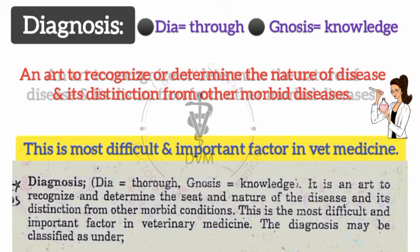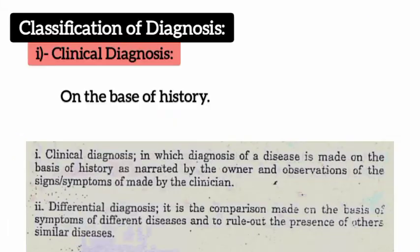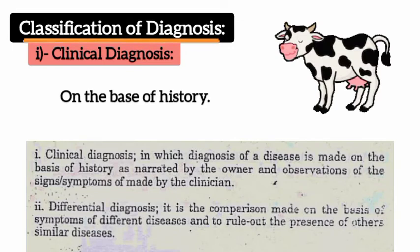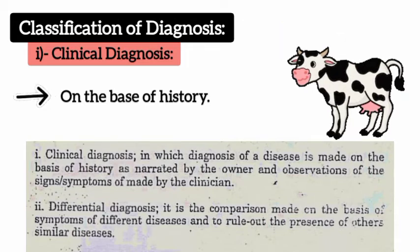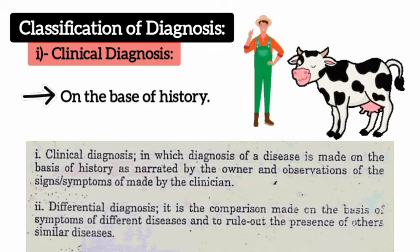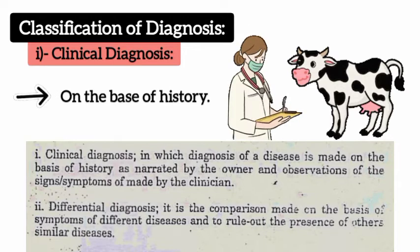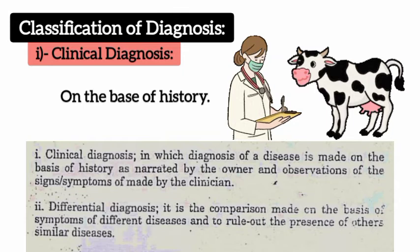Classification of diagnosis: The first class is clinical diagnosis, which includes diagnosis of any disease on the basis of history as provided by the owner of the animal, and observation of signs and symptoms by the veterinarian.